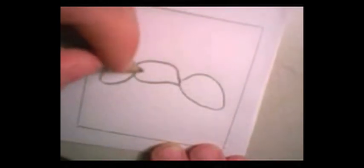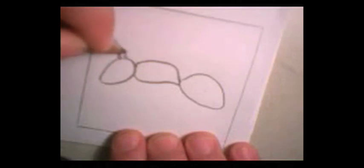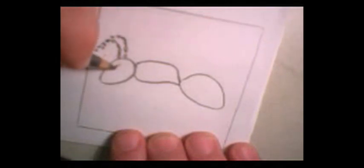But they have these really cool things on them called antennae, and I just use little ovals to make them. If I ever go too fast, just hit the pause button.